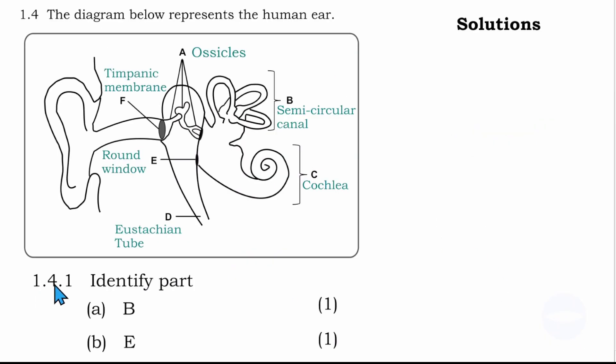First question, 1.4.1 says identify part A and part E. Part A are ossicles, while part E is the round window.